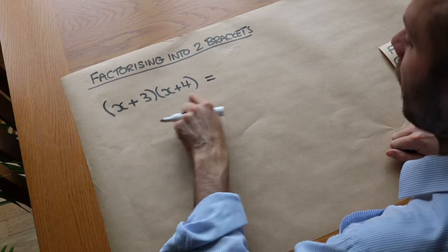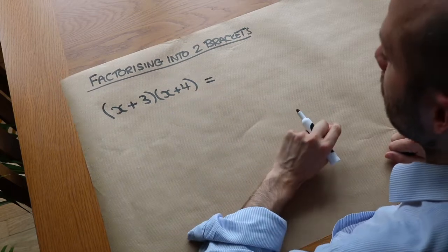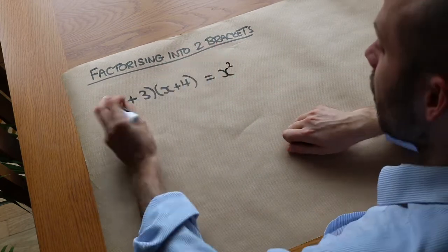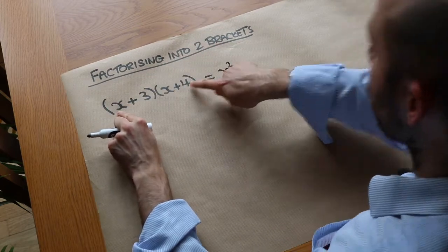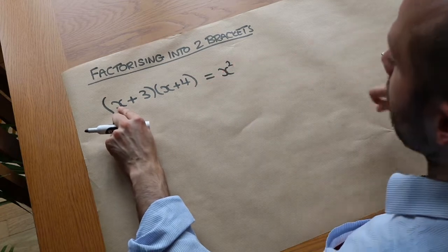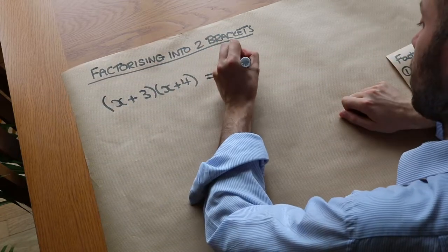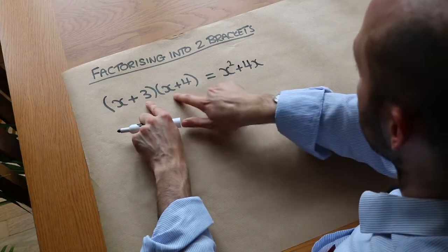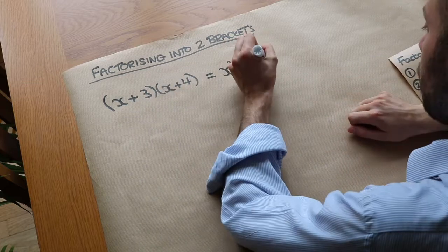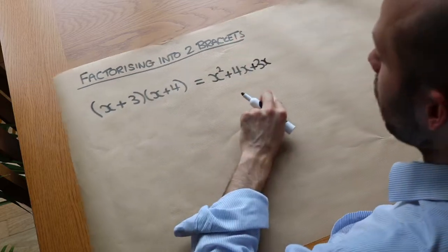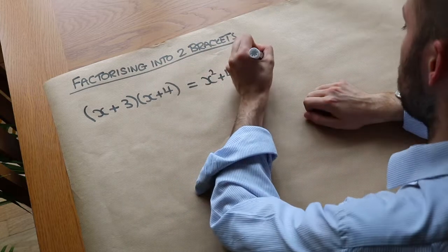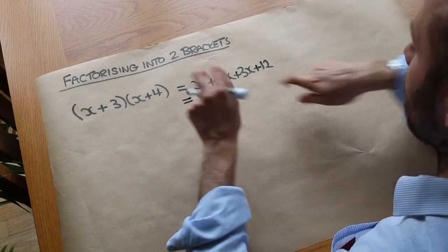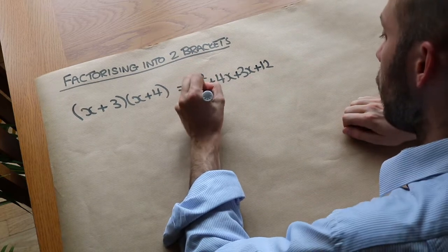What we do is we multiply each thing in the first bracket by each thing in the second bracket. So x times x gives us x squared. x times 4 gives 4x. Then we do 3 times x, which is 3x, and 3 times 4, which is 12. Collecting like terms, we collect the 4x and 3x together to give 7x.